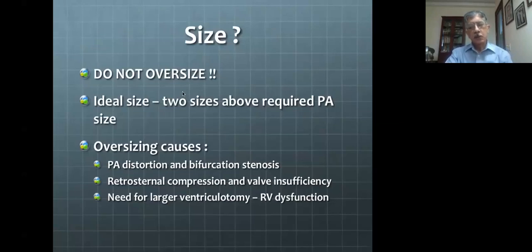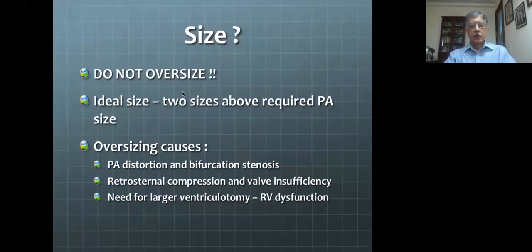When the valve annulus gets compressed, it produces valve insufficiency, and this incompetent valve degenerates much faster. Also, to accommodate a larger conduit, you need to make a much larger ventriculotomy, which increases the potential for right ventricular dysfunction. This is compounded when the patient already has some right ventricular volume compromise because of intracardiac tube placement — for example, the fairly large left ventricular patch placed inside during LV-to-aorta connection. Placement of a large ventriculotomy further compromises the right ventricle.